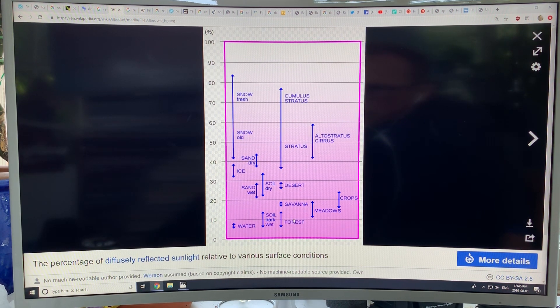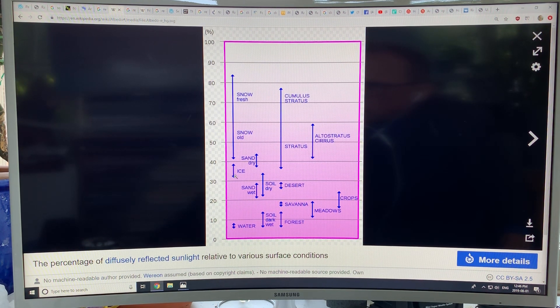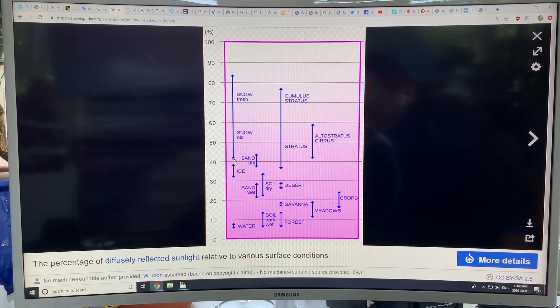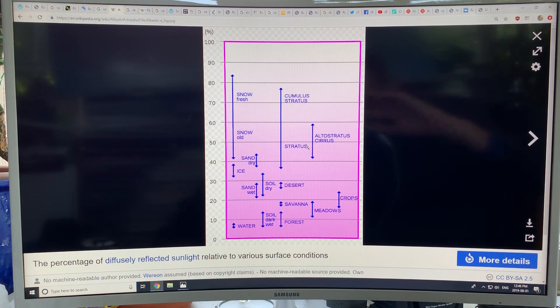Soils are dark, forests are generally dark, meadows, crops, right? This is the range, desert, desert sands will be lighter, ice is higher. But snow, old snow can be about 40, just over 40, new snow over 80. And then you have the clouds, cumulus clouds, different types of clouds. So I'll continue. Thanks for listening.